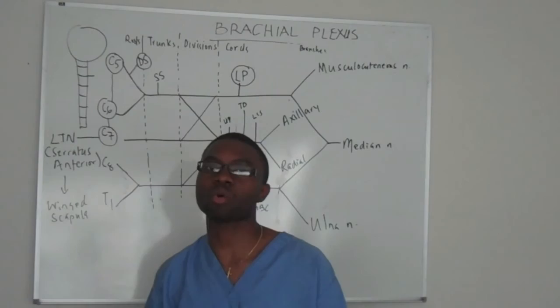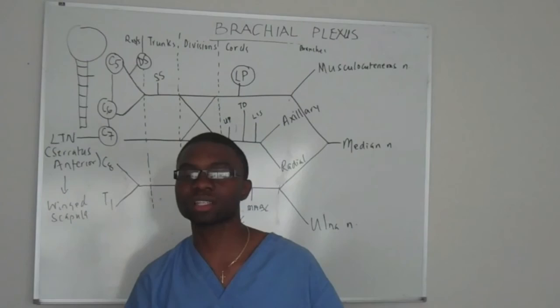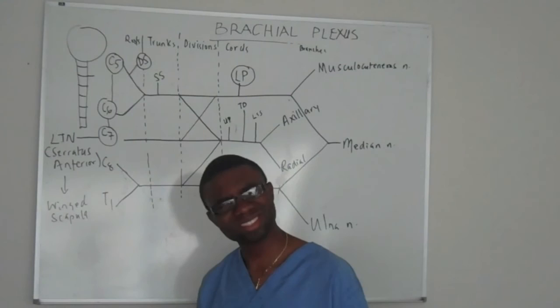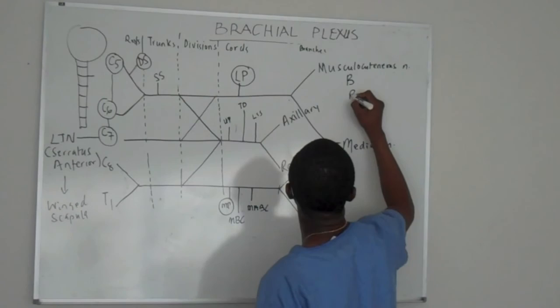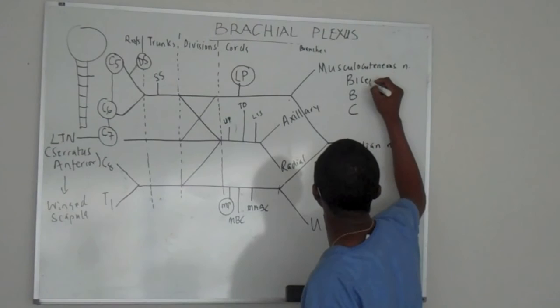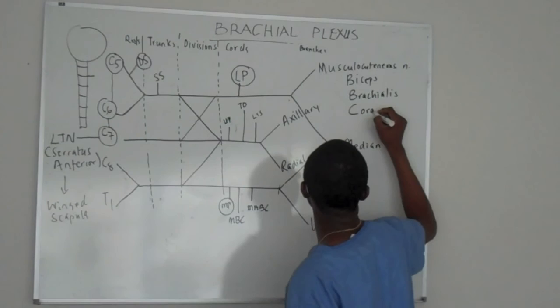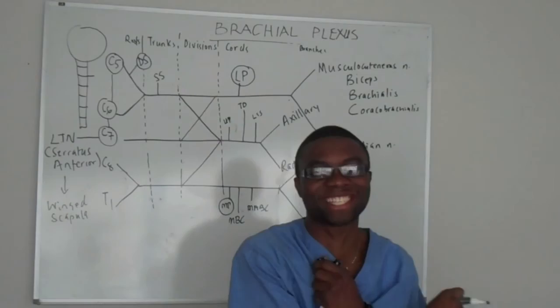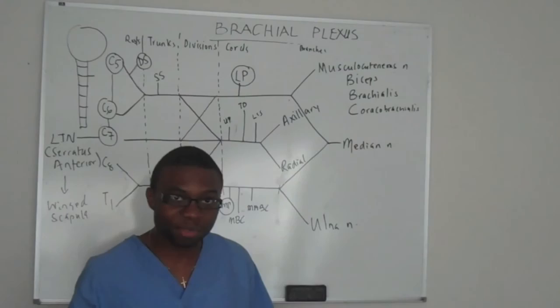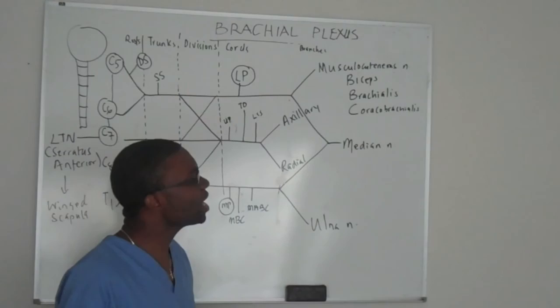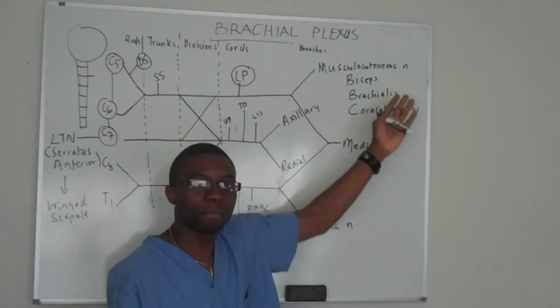What muscle does the musculocutaneous nerve innervate? BBC! BBC stands for biceps, the brachialis, and the coracobrachialis. These muscles — the biceps, brachialis, coracobrachialis — are innervated by the musculocutaneous nerve. That's a beautiful mnemonic. That's how you remember it. BBC — musculocutaneous.